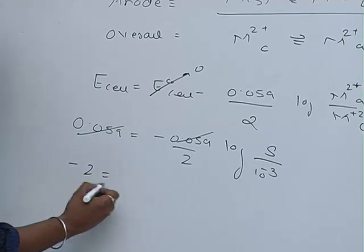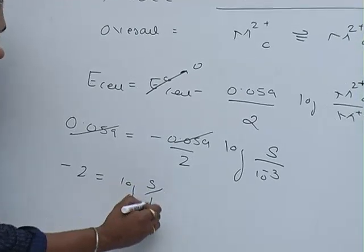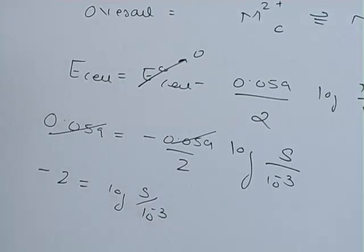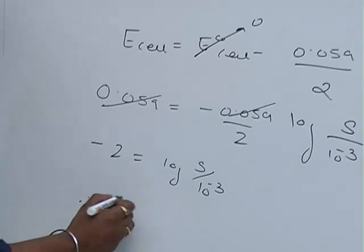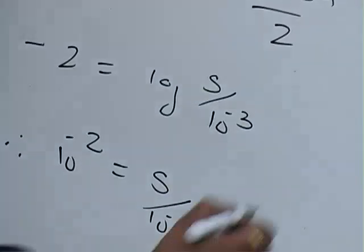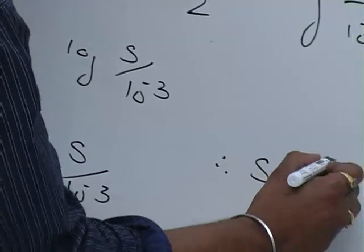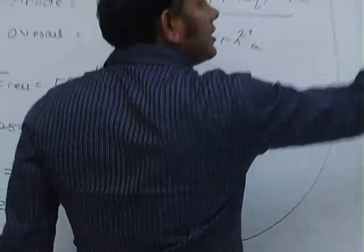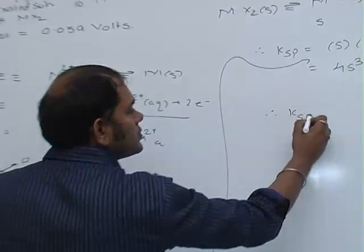Therefore, we get minus 2 equals log of S upon 10⁻³. This gives us 10⁻² equals S upon 10⁻³. Therefore, S equals 10⁻⁵.